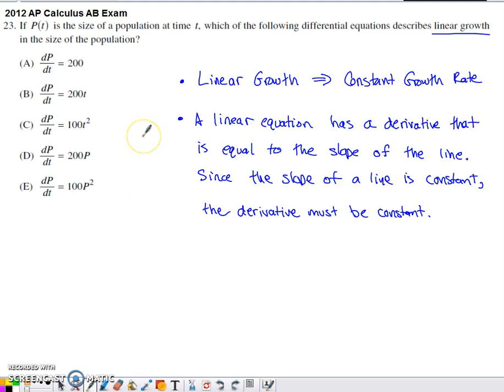Here's number 23 from the 2012 AP Calc multiple choice, non-calculator question. It tells us that p(t) is the size of a population at time t. Which of the following differential equations describes linear growth in the size of the population?